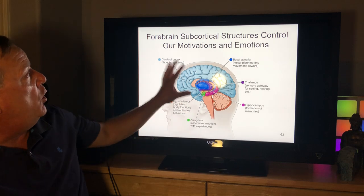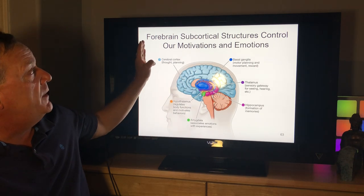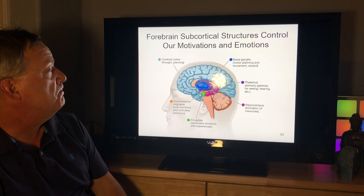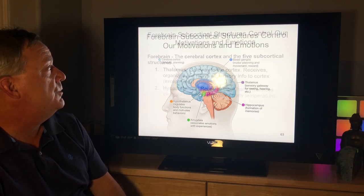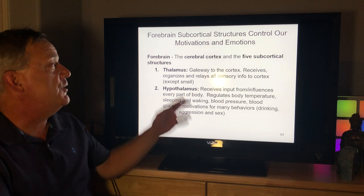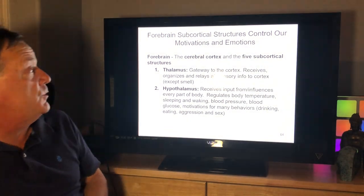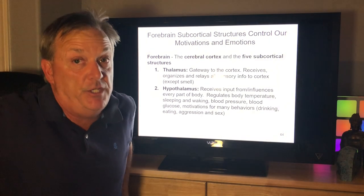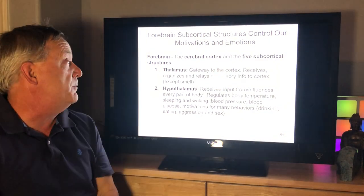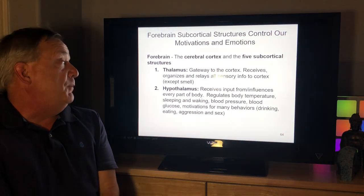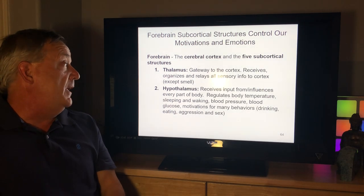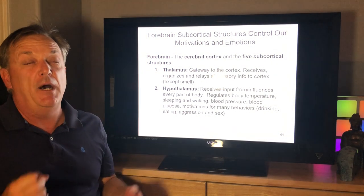Now looking at the four brain subcortical structures: the thalamus is known as the gateway to the cortex — it receives, organizes, and relays all sensory information except for smell.